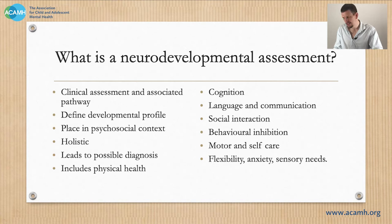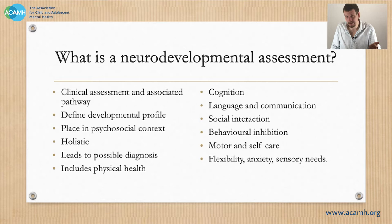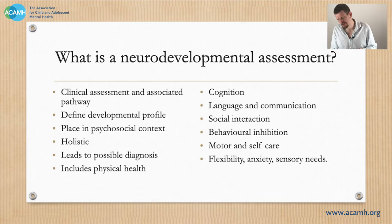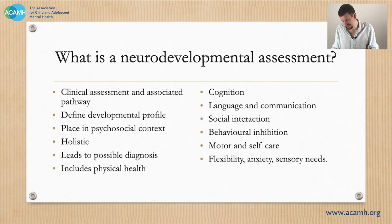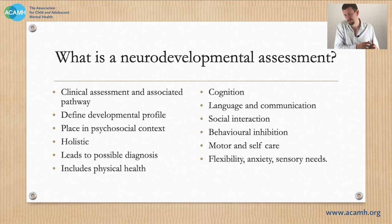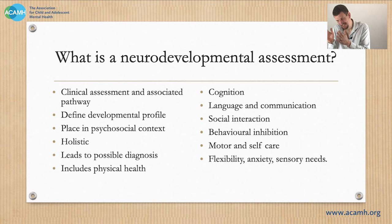The aspects we're looking at include cognition — often not directly in terms of questioning but by finding out the child's academic levels from school and some direct assessment. We talk about language and communication, the child's social interaction, and particularly for older children, behavioural inhibition. Motor and self-care skills are also vital and interrelated to everything else. I also have a section on the child's flexibility, their anxiety and their sensory needs, because those seem to group together and be difficulties with the same group of children.